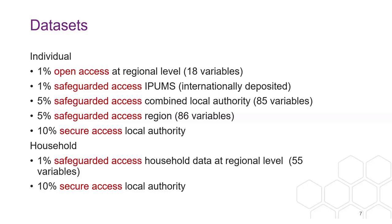Running through the different individual-level datasets: there's a 5% sample for combined local authority, which is the one we'll be looking at today. There's also a 5% safeguarded for region that has an additional variable. There's an internationally deposited one at the University of Minnesota covering microdata from many countries. At household level, there's a 1% safeguarded sample at regional level with 55 variables, and a 10% secure access local authority dataset.